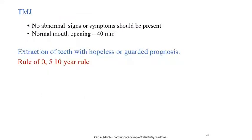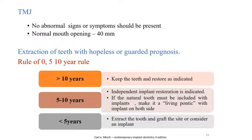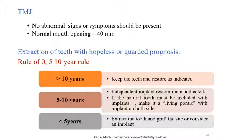The temporomandibular joint should be evaluated or palpated — no abnormal signs or symptoms should be present, and normal mouth opening should be around 40 mm. Regarding extraction of teeth with hopeless or guarded prognosis, there is the rule of 0, 5, 10 years: if the prognosis is more than 10 years, we keep the teeth; if it is 5 to 10 years, we either do an implant restoration or use the tooth as a living pontic; if it is less than 5 years, we extract the tooth and graft the site.